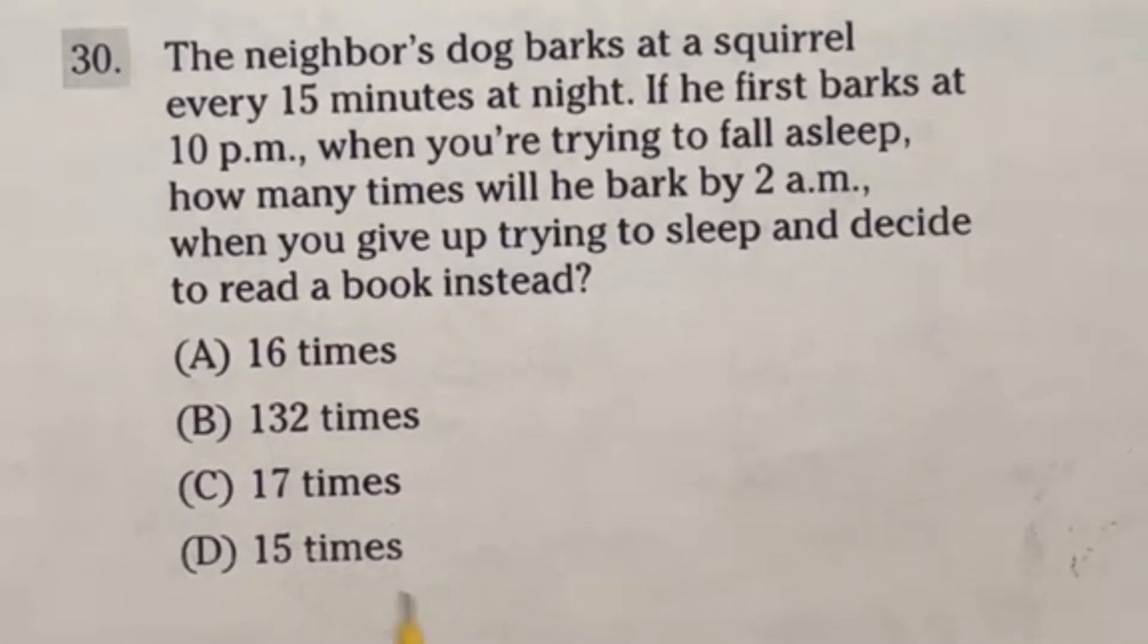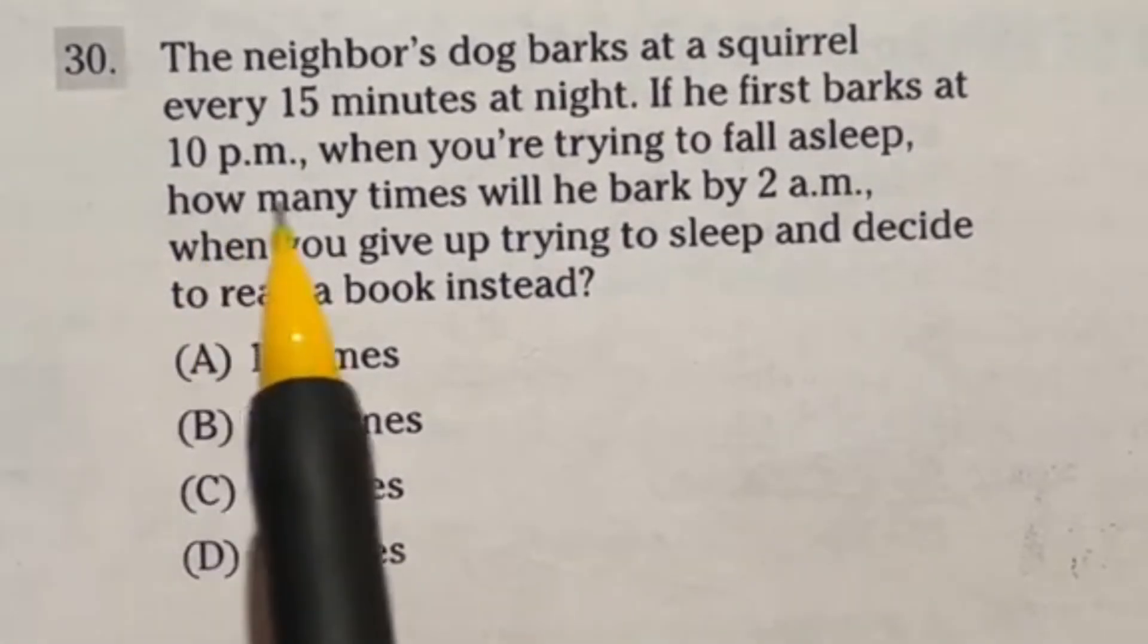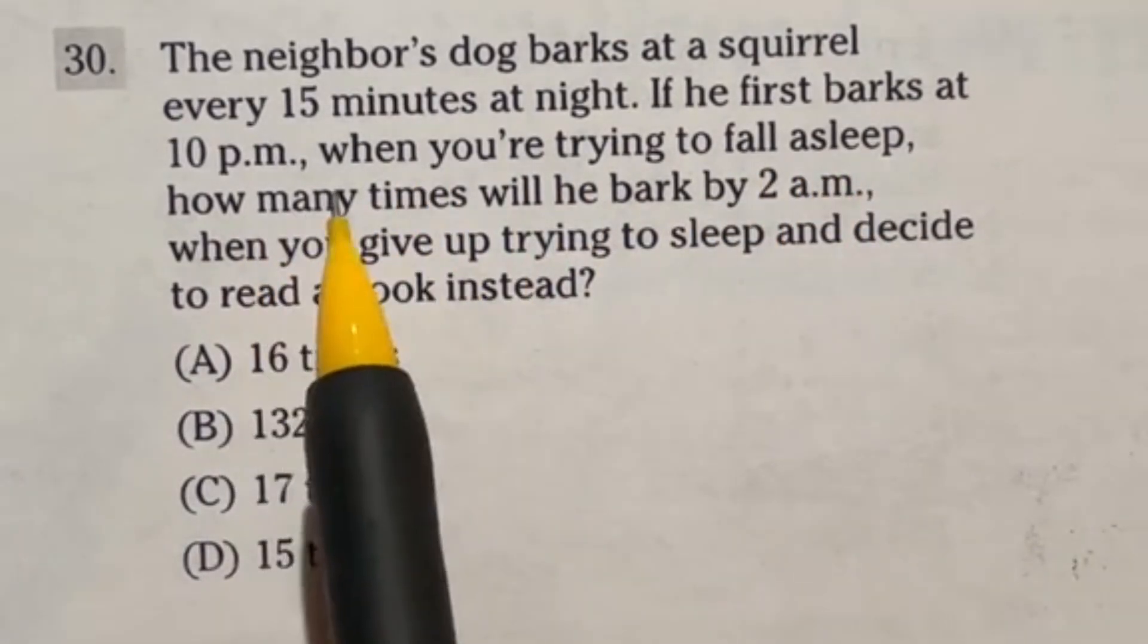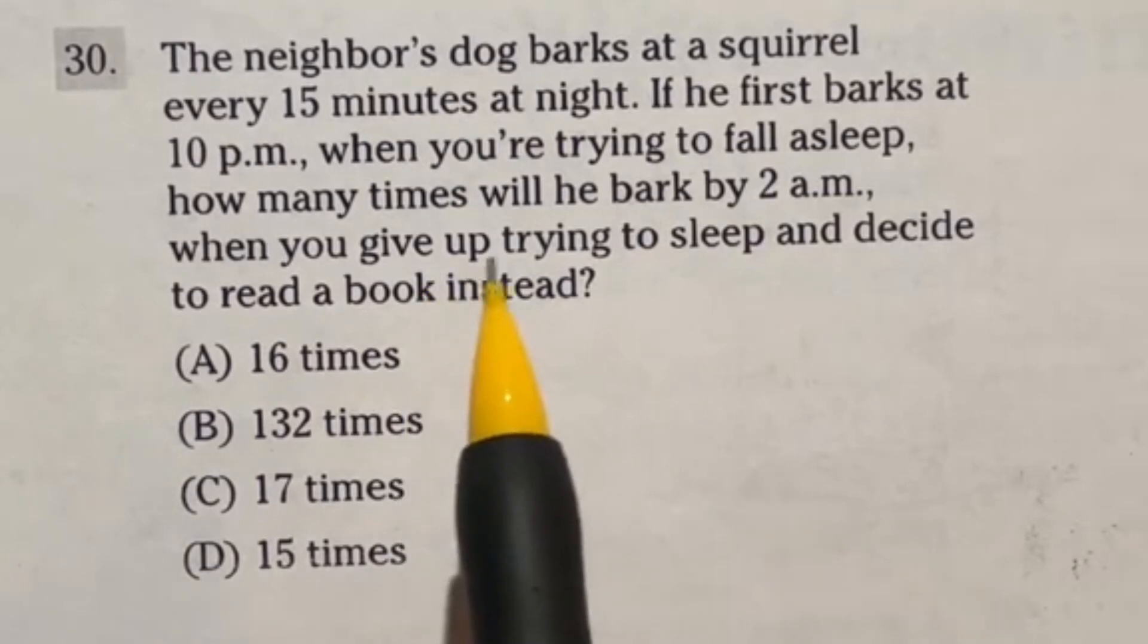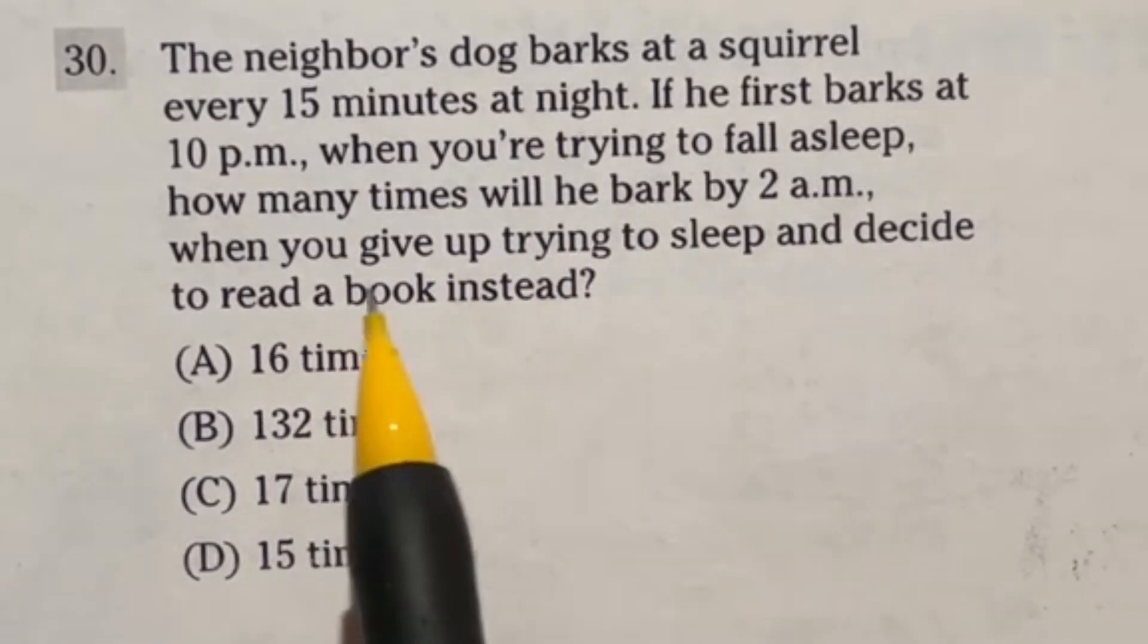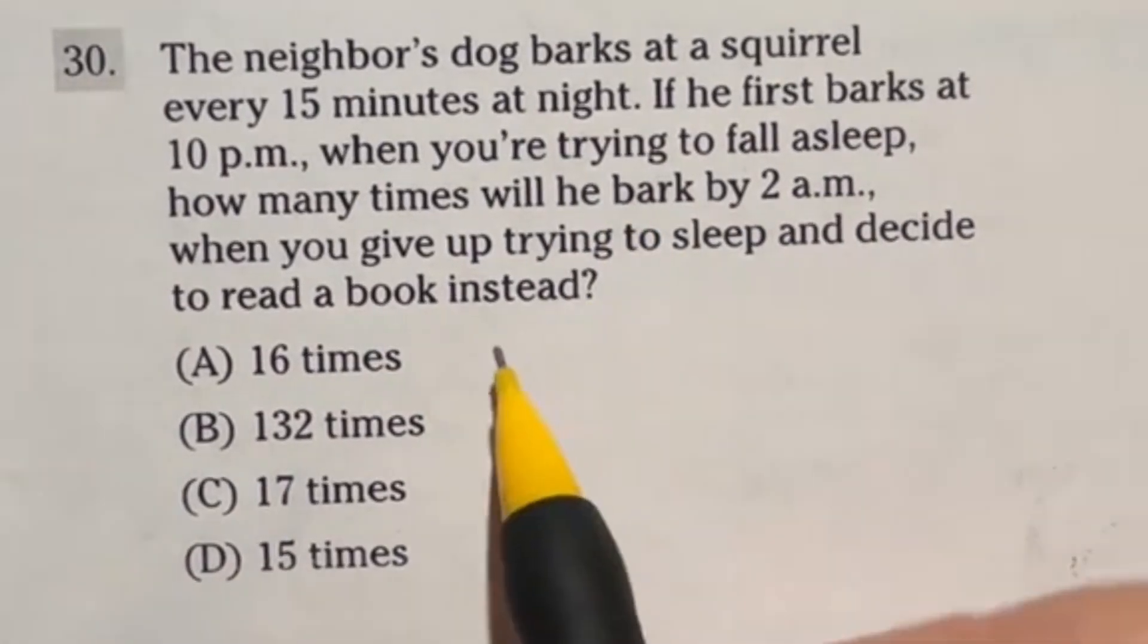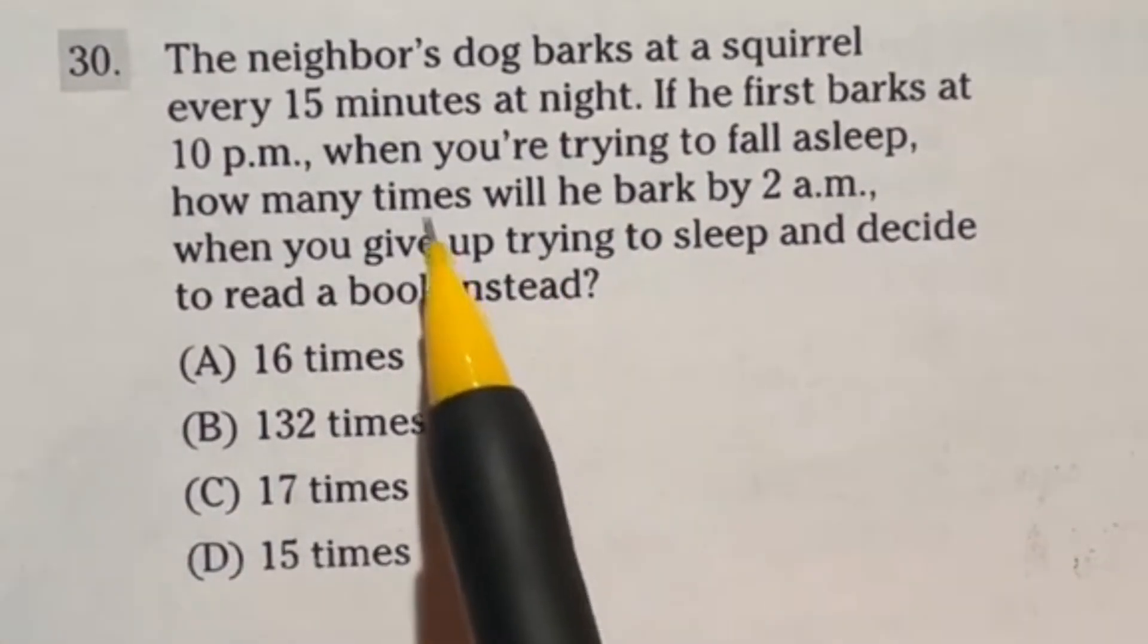Don't get wrecked by number 30. Let's find out how. It says the neighbor's dog barks at a squirrel every 15 minutes at night. If he first barks at 10 p.m. when you're trying to fall asleep, how many times will he bark by 2 a.m. when you give up trying to sleep and decide to read a book instead? So let's take a look here. There is a little bit of a trick to this one, so stick with me.